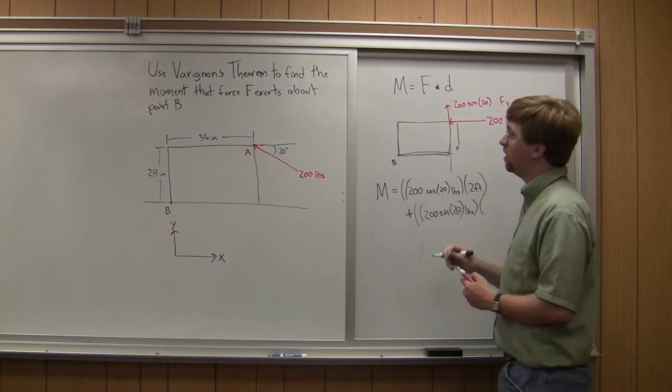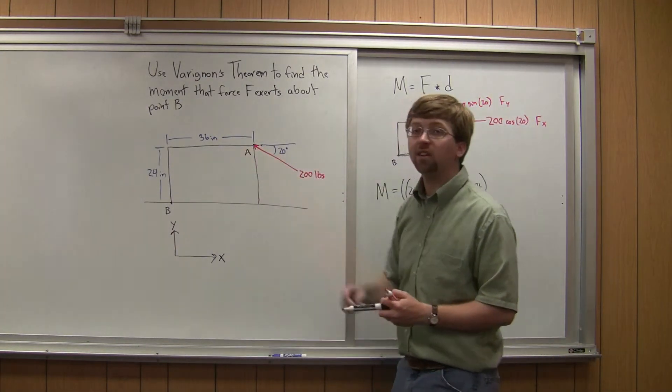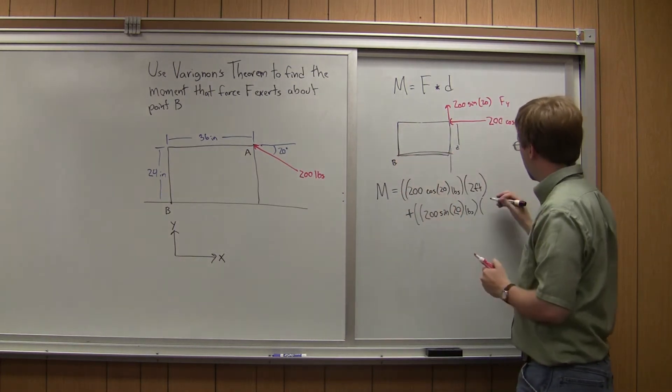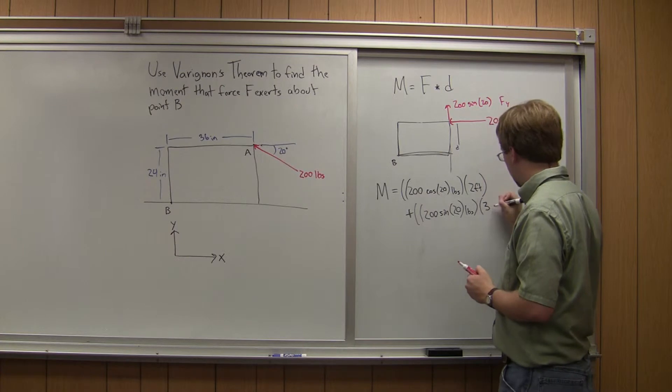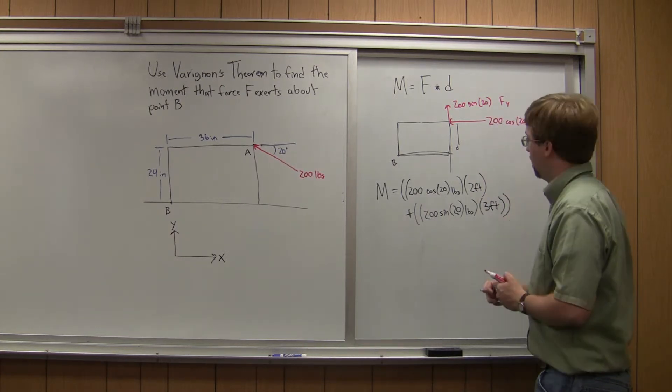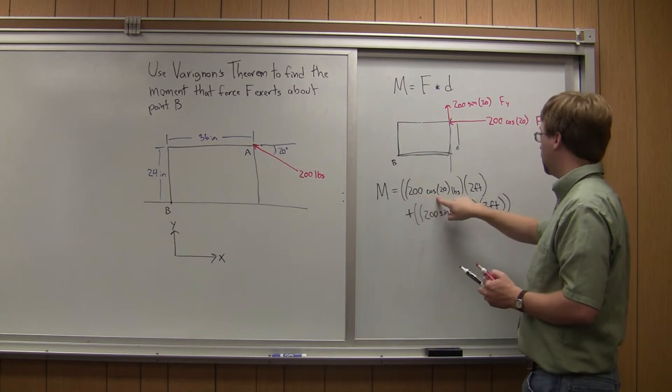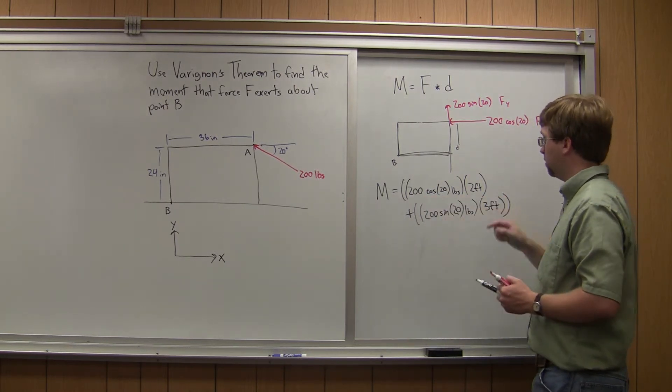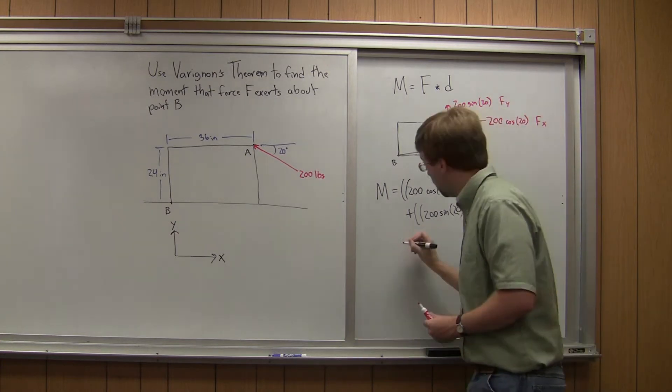times my distance is going to be 36 inches in this case. That's the closest it gets to point B. And that is, I convert that again to 3 feet. And so if I do 200 cosine 20 times 2 plus 200 sine 20 times 3, I end up with an overall moment.